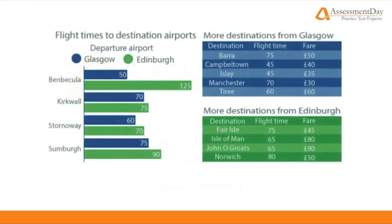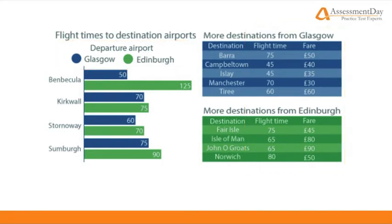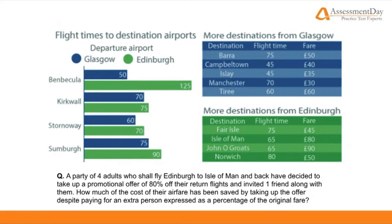Let's take a look at our question. Take a cursory glance at the graph and tables. We can see that there are two airports being considered: Glasgow and Edinburgh. There is a combination of flight times, whether they come from Glasgow or Edinburgh, and fares for the flights. The question contains many variables, so let's go through it once before attempting to break it down.